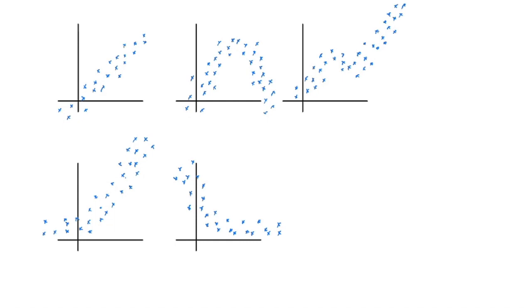So you're going to take a look at the data that you're given and ask yourself which of these regression trends it most closely resembles. And then that's the type you're going to choose.